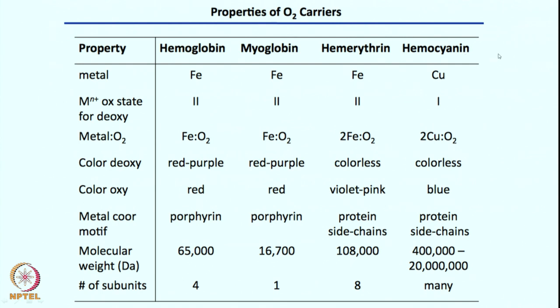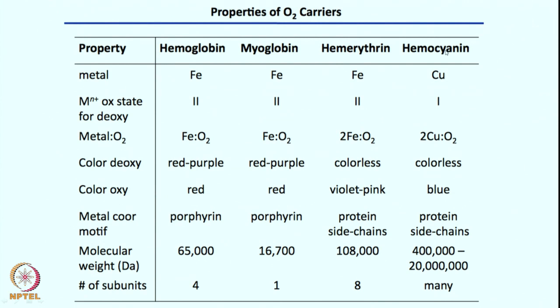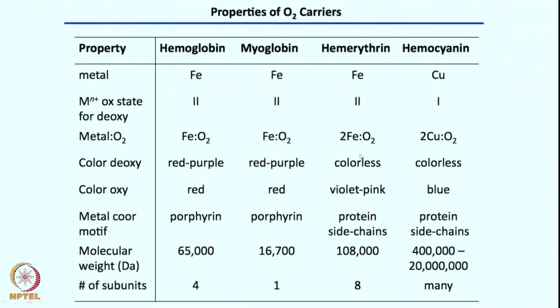Today we will focus on iron-oxygen binding chemistry with hemoglobin and myoglobin. Hemerythrin and hemocyanin will be discussed in later classes. Just to note, hemerythrin has two iron centers which can also bind and transport oxygen. In none of these cases does oxygen remain simply as O2. These iron-oxygen species interact with each other to give a hydroperoxo species in one case, a peroxo in another, and a superoxo species in another.